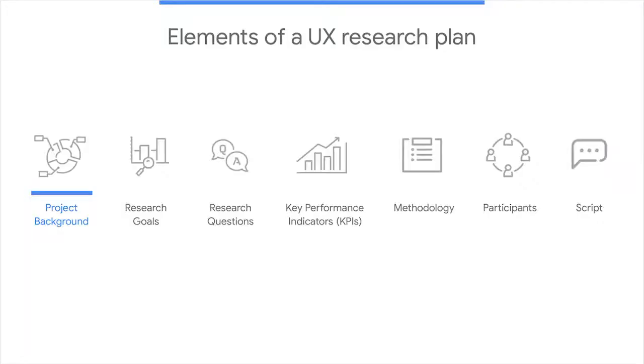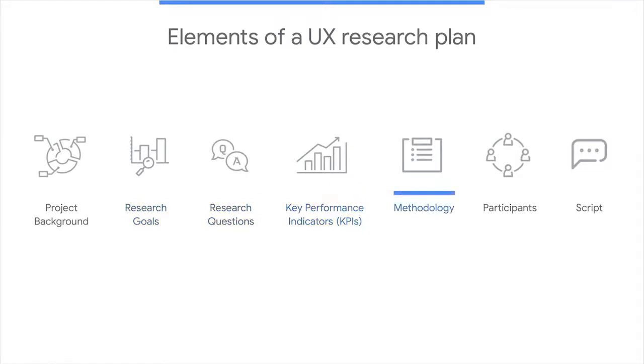Ready to start our journey through a UX research study? Let's explore the first step, planning the study. Like any good explorer, you need to have a plan for where you're headed. There are seven elements your plan should include: the project background, the research goals, the detailed research questions, the key performance indicators or KPIs, the methodology, the participants, and the script or questions you'll ask participants.